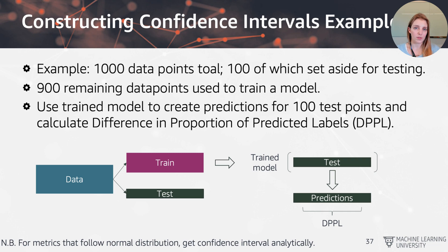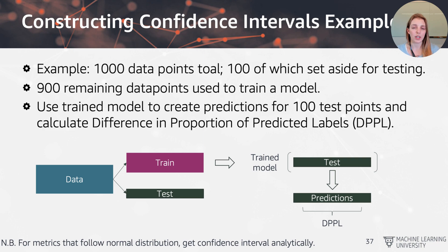So 900 data points remain for training the model, and then we're going to use the trained model to create predictions for the 100 test data points that we have. We're calculating the difference in proportion of predicted labels — this is just a placeholder metric, and obviously you could substitute this with any other measure that you want to calculate confidence intervals for.